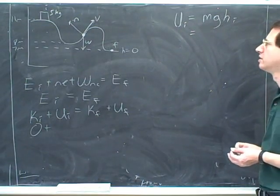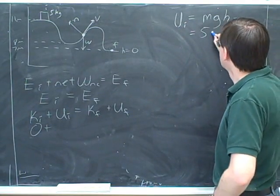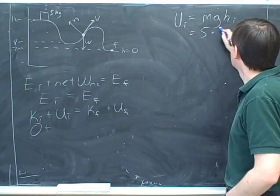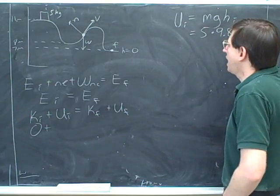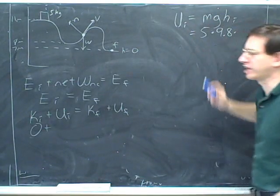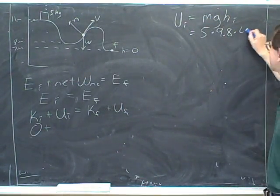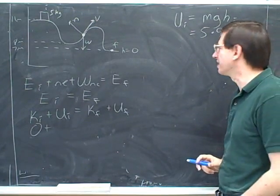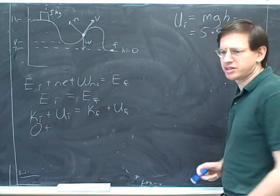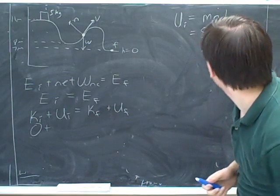What would we plug in for m? 5 at least. And for g? 9.8. And if this is the height of 0, what would we plug in for h? 4. That's right. Okay, so that would work fine. All right, so do you have your calculator with you? Let's figure out what that is.